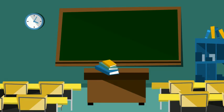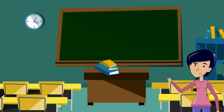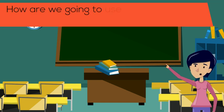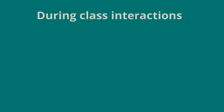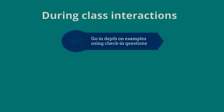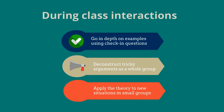When I want my students to read before class interactions, I ask myself three questions. Question 1: How are we going to use the readings during class interaction? For example, will we go into depth on examples in the chapter using some check-in questions, or deconstruct tricky arguments as a whole group, or apply the theory to new situations in small groups?